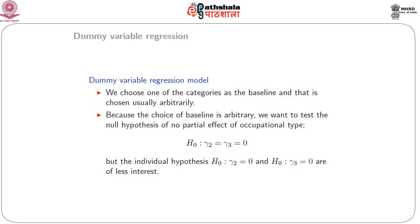Because the choice of baseline is arbitrary, we want to test the null hypothesis that no partial effect of occupational type exists. When fitting the model using dummy variables d_2 and d_3, the null hypothesis of interest is gamma_2 equals gamma_3 equals 0. The individual hypotheses are of less interest. This joint hypothesis can be tested using the incremental sum of squares approach — removing both d_2 and d_3 from the model and testing their statistical significance.